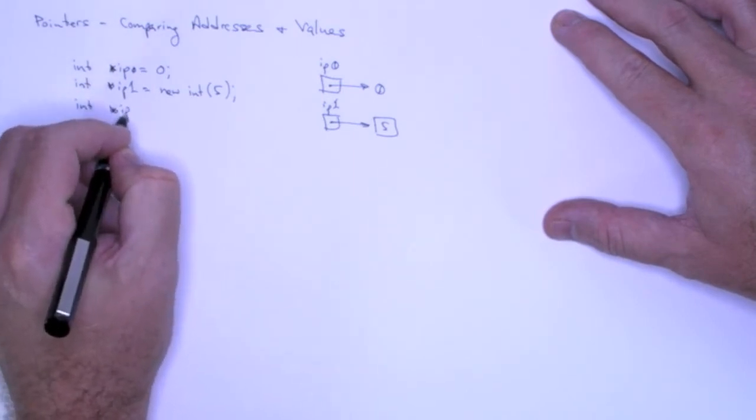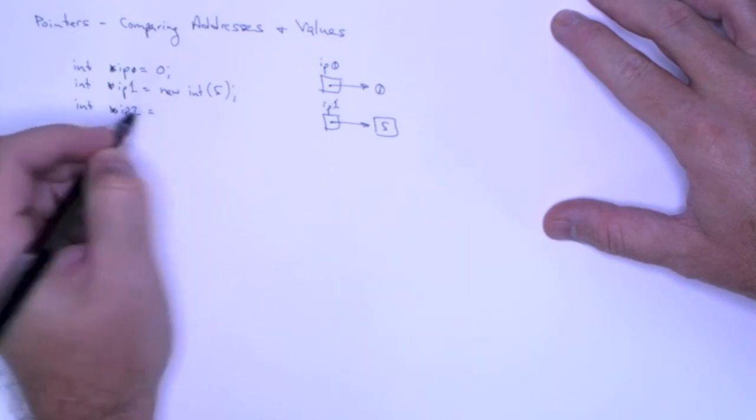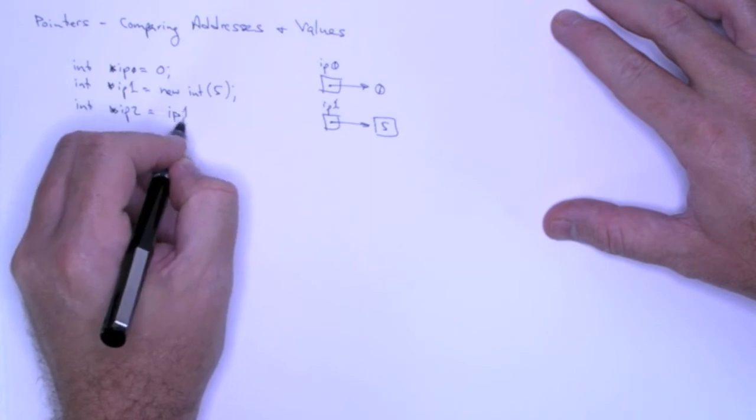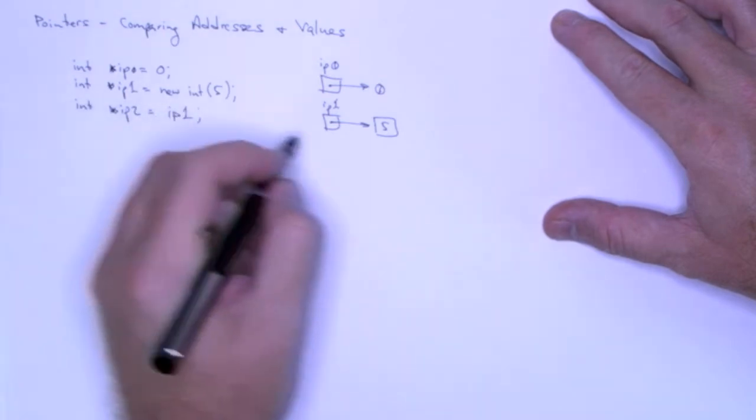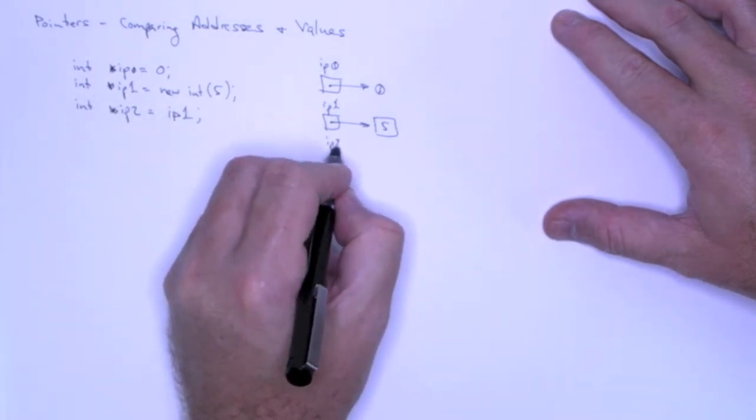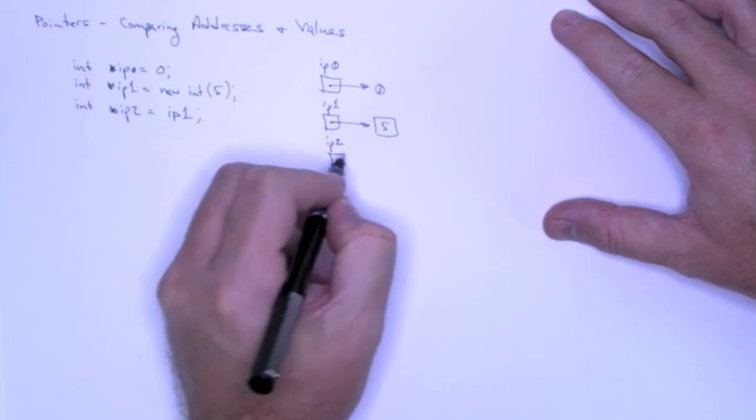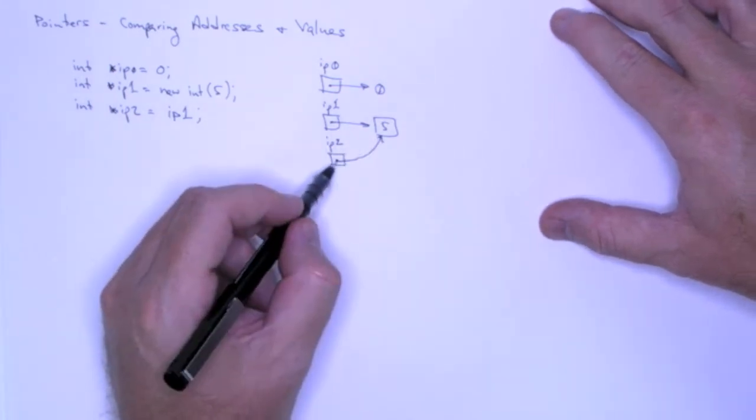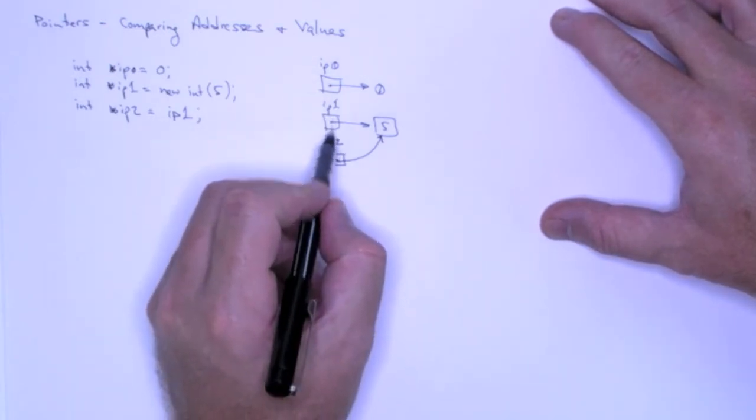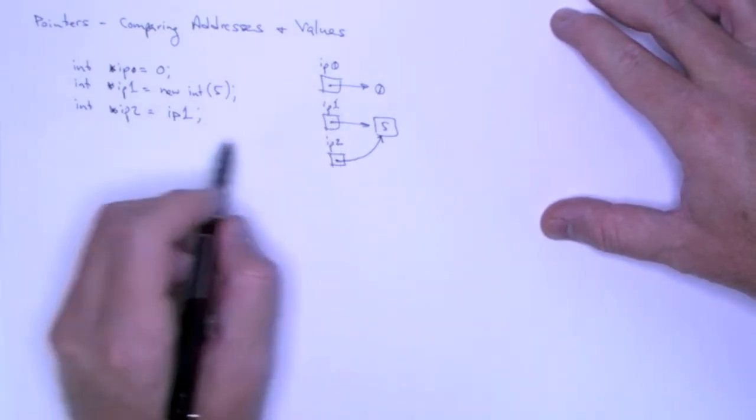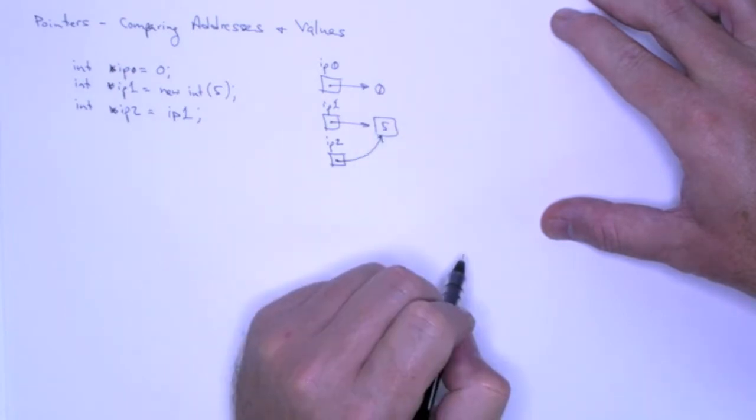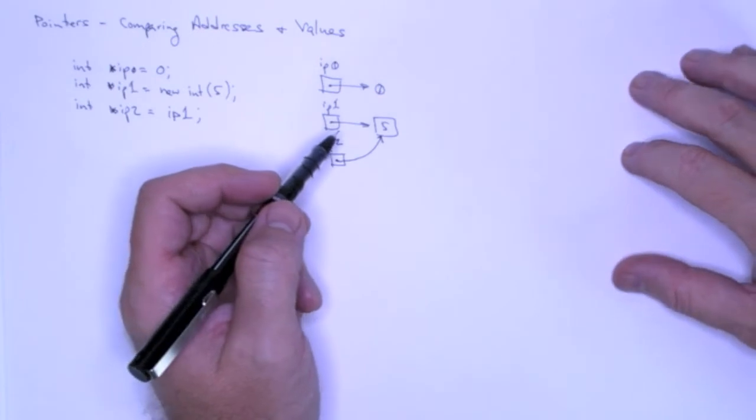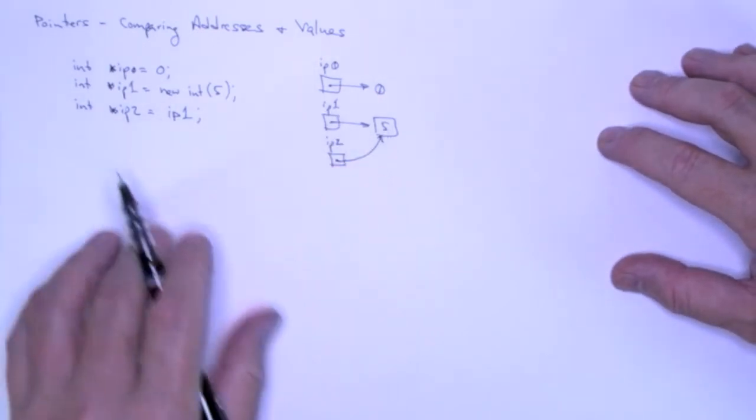And now IP2, I'm going to make it point to the same thing that IP1 points to. Now in terms of our diagram, I have something that looks like this. So I have two pointers, they're storing the same address, which means that they're pointing to the same object. There's only one copy of 5, even though I have two pointers pointing to it.